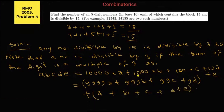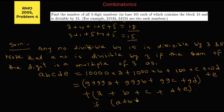Note that the term 9,999a plus 999b plus 99c plus 9d is a multiple of 9, so it is also a multiple of 3. Therefore, this whole number is a multiple of 3 if and only if a plus b plus c plus d plus e is a multiple of 3. That is what we have shown.